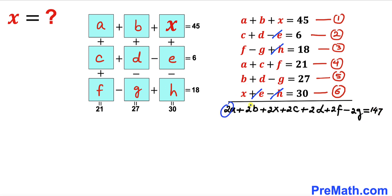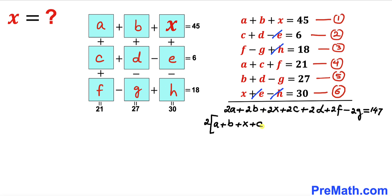We can see that 2 is a common factor across the entire left-hand side, so let's factor out 2. Inside the brackets we get: a plus b plus x plus c plus d plus f minus g equals 147.